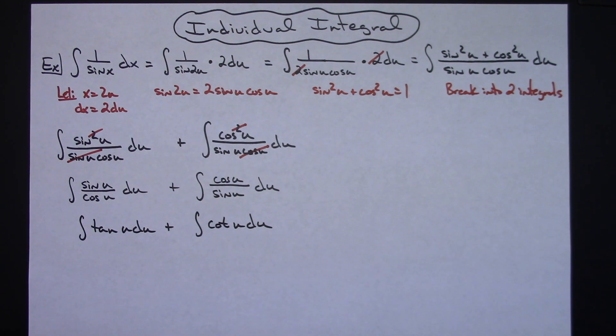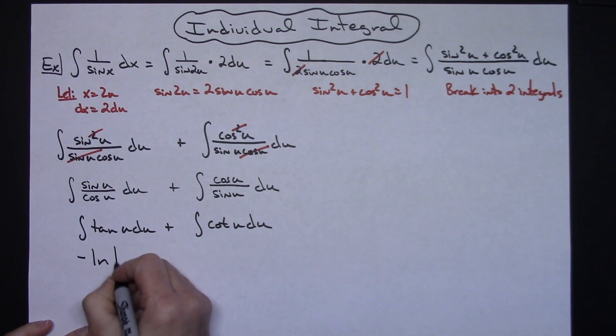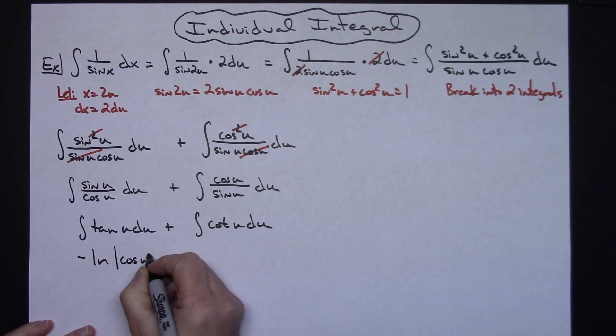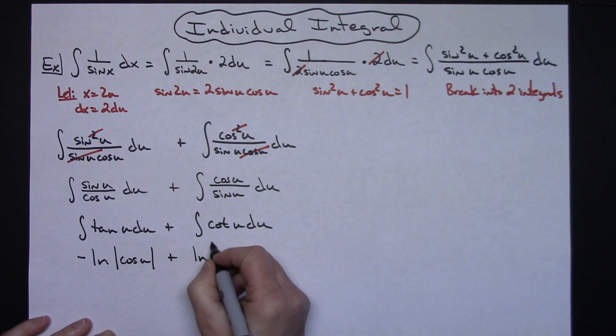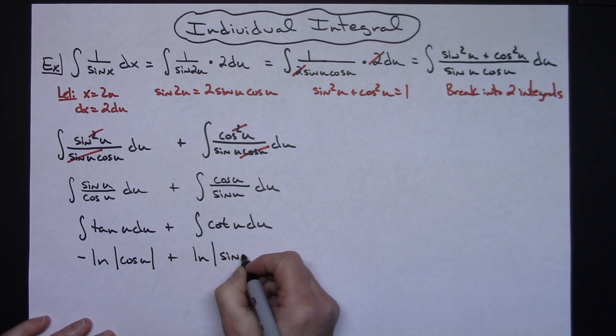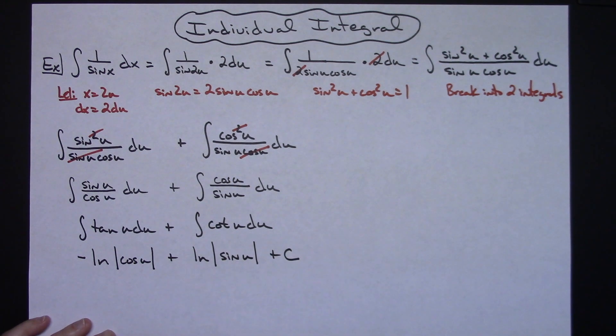Now at this point, now it's a pretty straightforward integration. Hopefully you have both of these memorized. This integral of tangent u is going to be the negative natural log absolute value cosine u and the integral of cotangent is that natural log absolute value sine u. And I can put in my plus c.